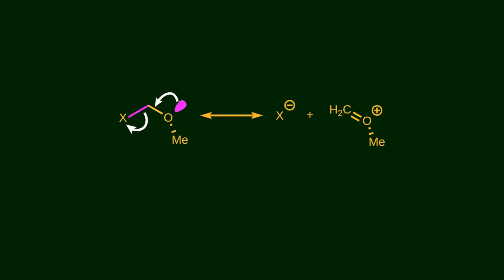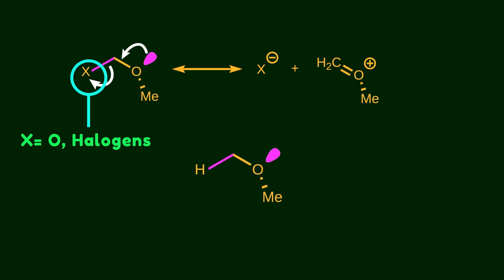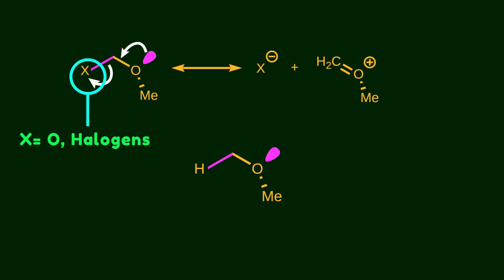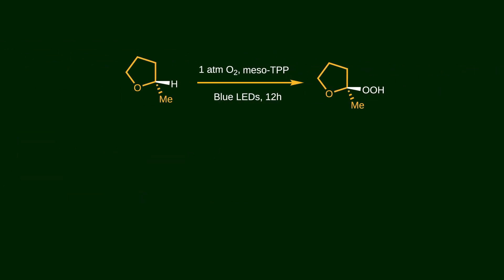Until now, we explored the anomeric effect in compounds with good acceptors — meaning a highly electronegative atom like oxygen or a halogen is attached to carbon to accept non-bonding electrons. But carbon-hydrogen bonds can also be affected by the anomeric effect under some reaction conditions, although they are not good acceptors. Look at this reaction in which THF reacts with singlet oxygen to install a peroxide at the alpha position relative to the oxygen atom. This is a good example of C-H activation by the anomeric effect.